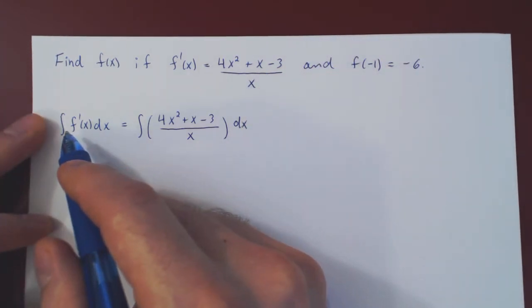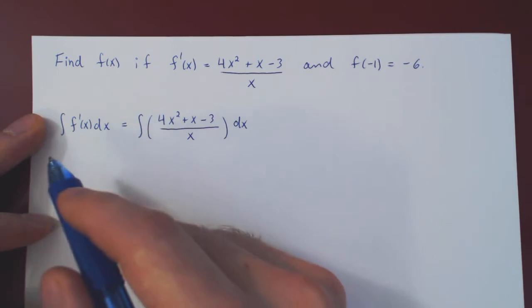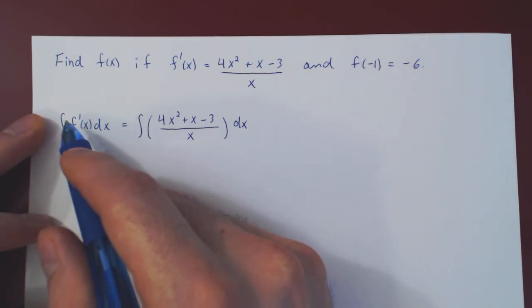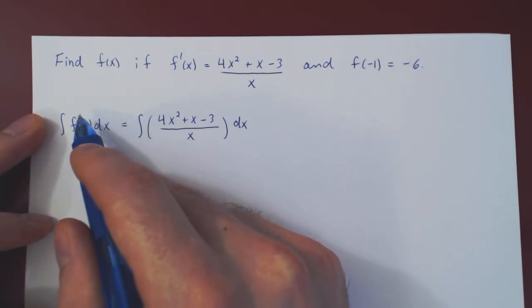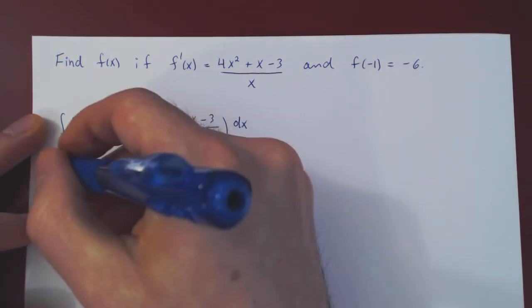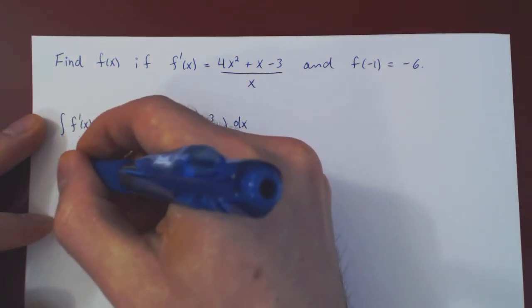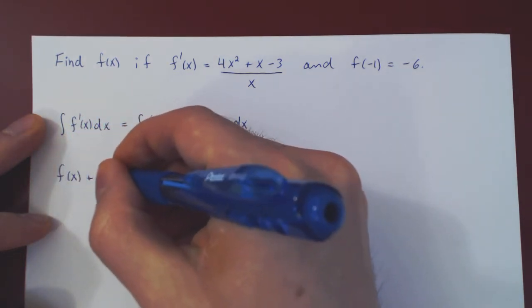Well, if you think back to what the integral is, you can think of it in two ways. If you integrate the derivative, as the integral is the inverse of differentiation, these will cancel each other, and you will be left with f(x) plus some arbitrary constant.